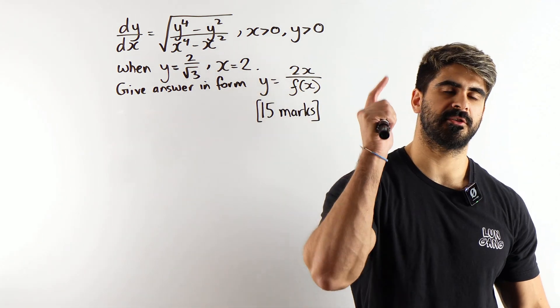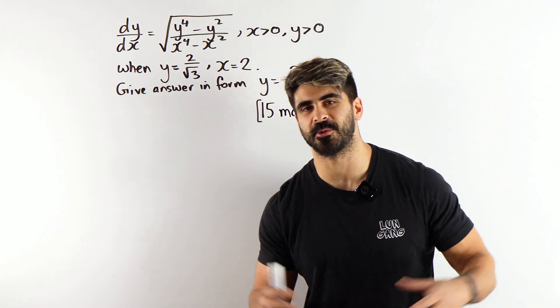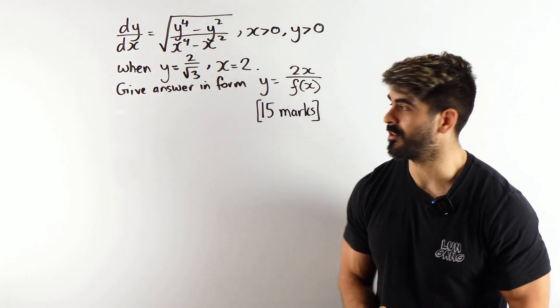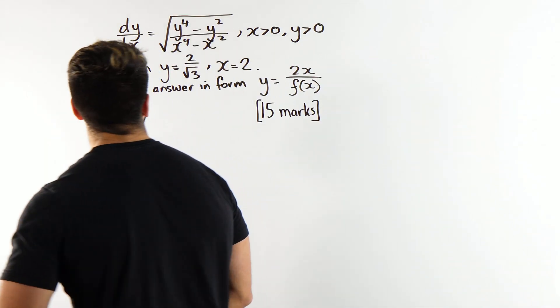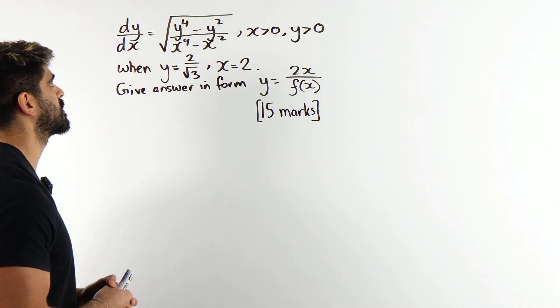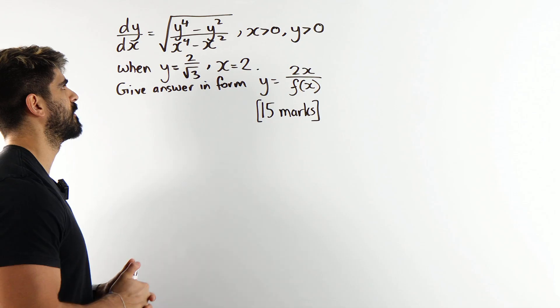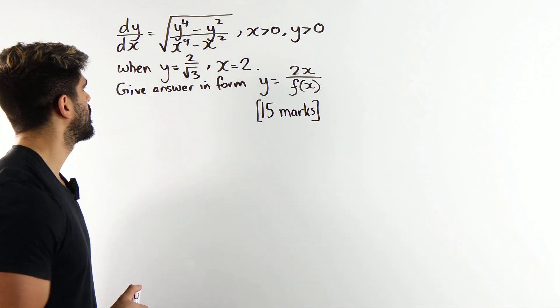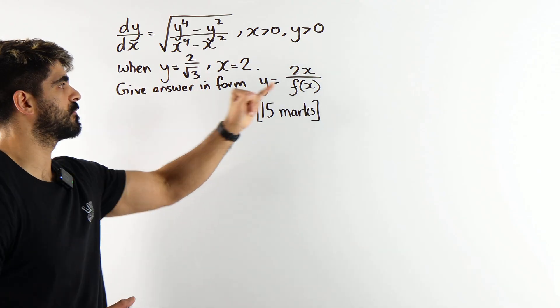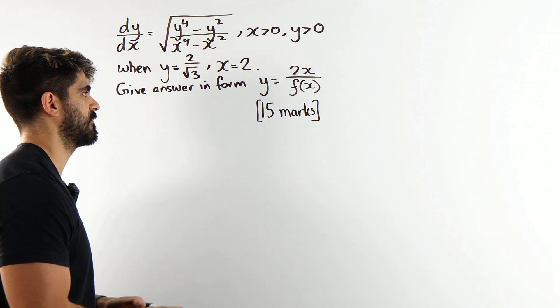Easiest 15 mark question you will ever see. You're going to want to stay tuned for this one because there's going to be a lot of learning lessons in one question. So we've got differential equations, dy by dx equals the root of y to the 4 minus y squared over x to the 4 minus x squared, where x and y are positive. When y is this, x is this, give your answer in the form y equals 2x over f of x.